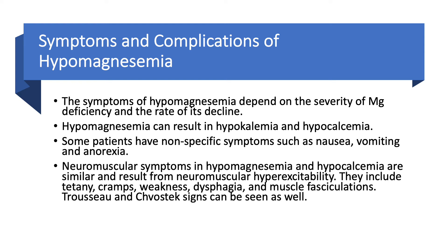Hypomagnesemia and hypocalcemia in particular can cause neuromuscular symptoms because you get hyperexcitability of the neuromuscular junction. Here you can get tetany, cramps, weakness, dysphagia, and even muscular fasciculations. Trousseau and Chvostek signs, like you see in hypocalcemia, can also be seen as well. We will talk about those signs more when we discuss hypocalcemia in the next chapter.